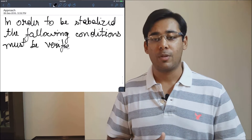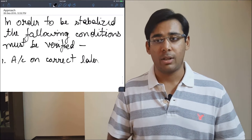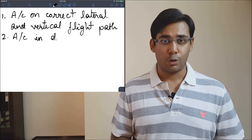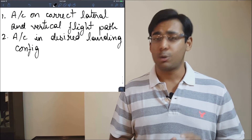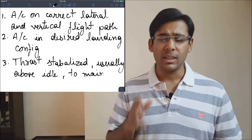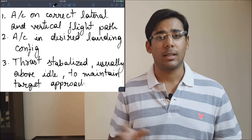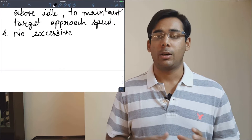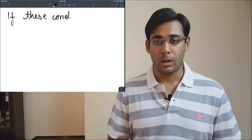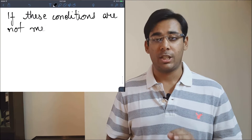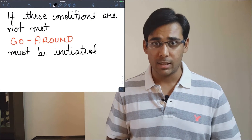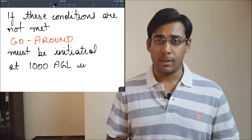The aircraft must be stabilized in the landing configuration at 1,000 feet AGL under instrument conditions. A few conditions must be met: the aircraft should be on the correct lateral and vertical flight path, in the landing configuration, thrust should be stabilized and usually above idle, maintaining V approach, and there should be no excess flight parameter deviations. If these conditions are not met, you must initiate a go-around at 1,000 feet AGL. This is just a stabilization criteria — do not confuse it with minimums.